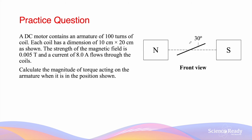Now, what about the magnitude of torque when the plane of the armature reaches the position where the angle between the horizontal and the plane of the armature becomes 30 degrees? If the armature is rotating anti-clockwise, the force on the left side acts downwards and the force on the right side acts upwards.